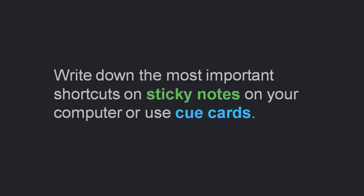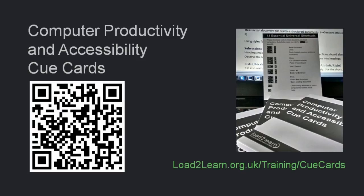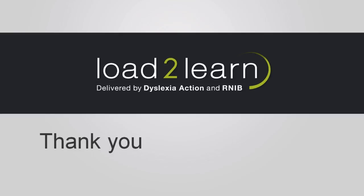It is also useful to set up some mnemonic device to help you remember shortcuts. Many shortcuts are related to one of the letters in the word of the command. There are other mnemonics too — for example, the X for cut resembles scissors, and the V resembles a tube, which is where you find paste. We have designed computer productivity and accessibility cue cards available from the Load2Learn website. You can download them, or make your own based on the cue cards in a way that makes more sense to you and is more responsive to your needs. Thank you for watching.